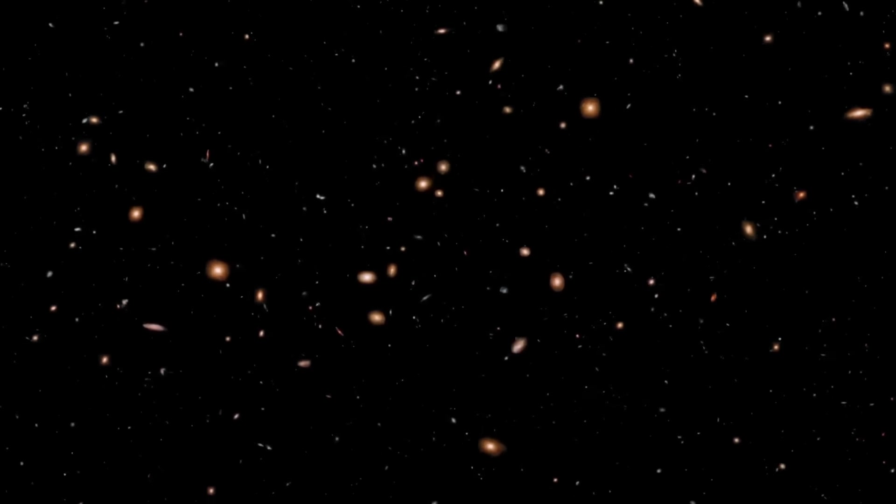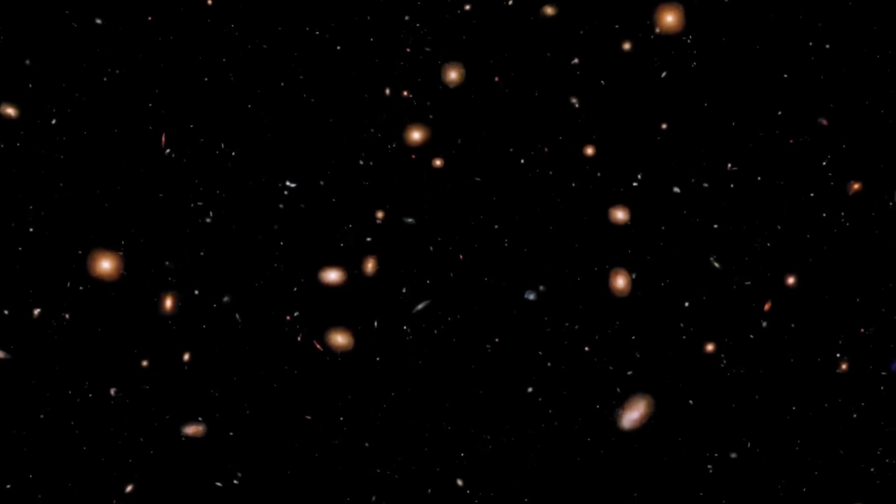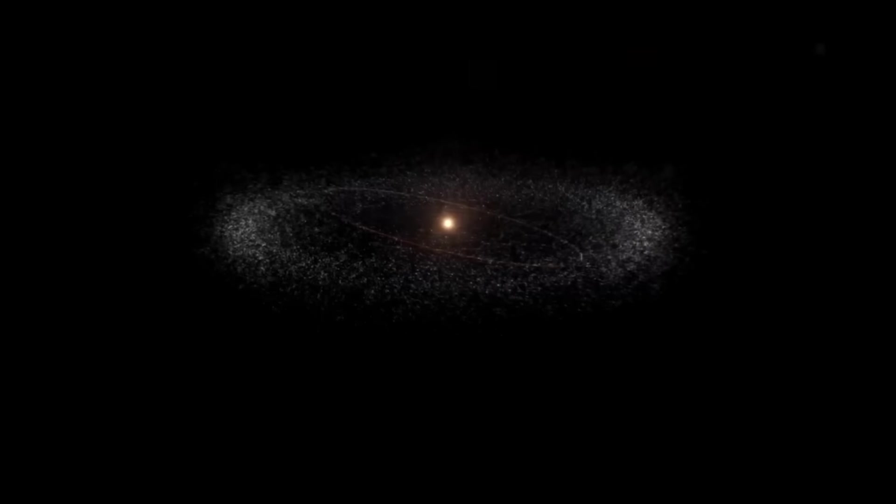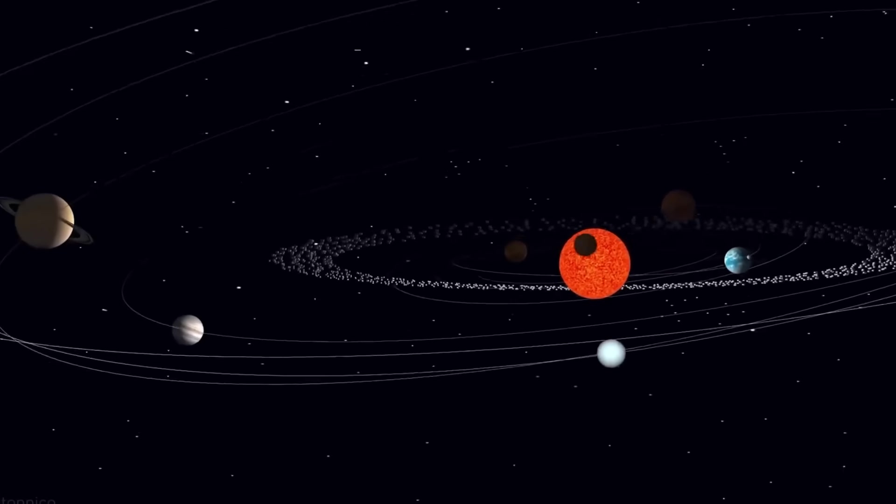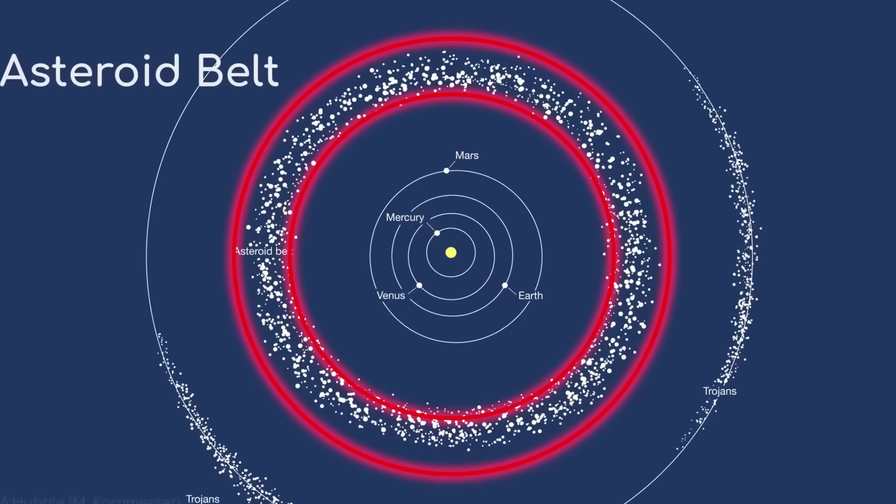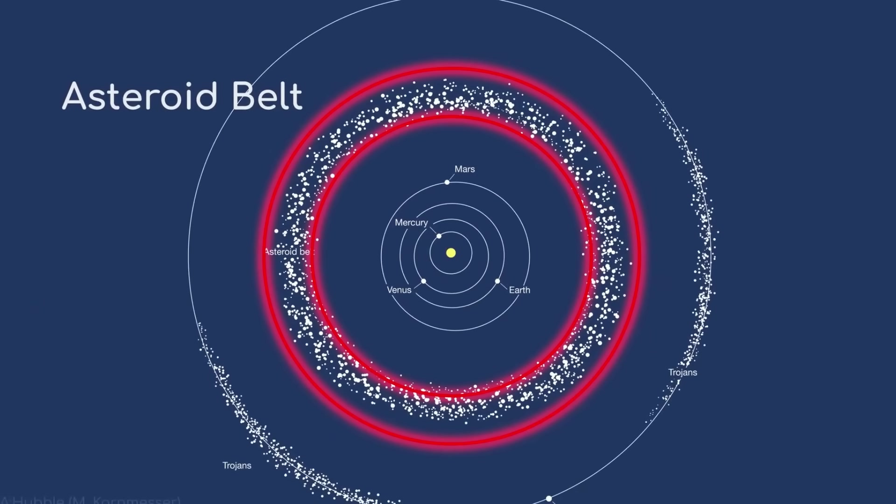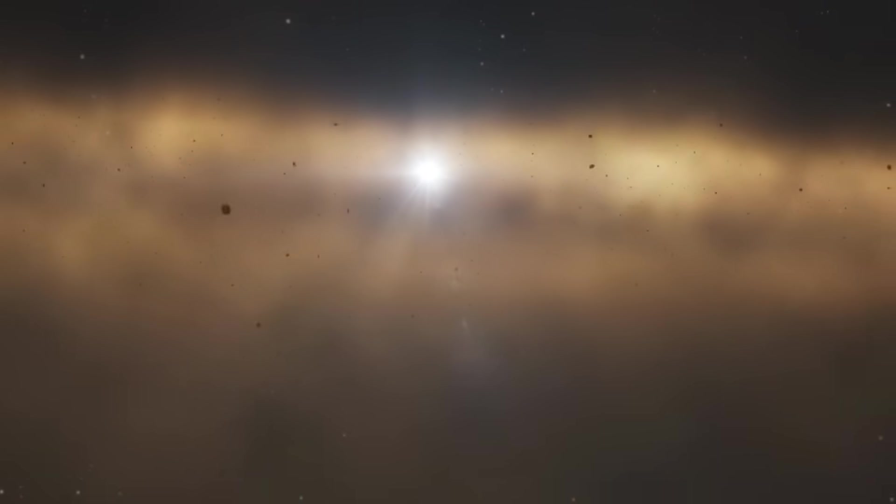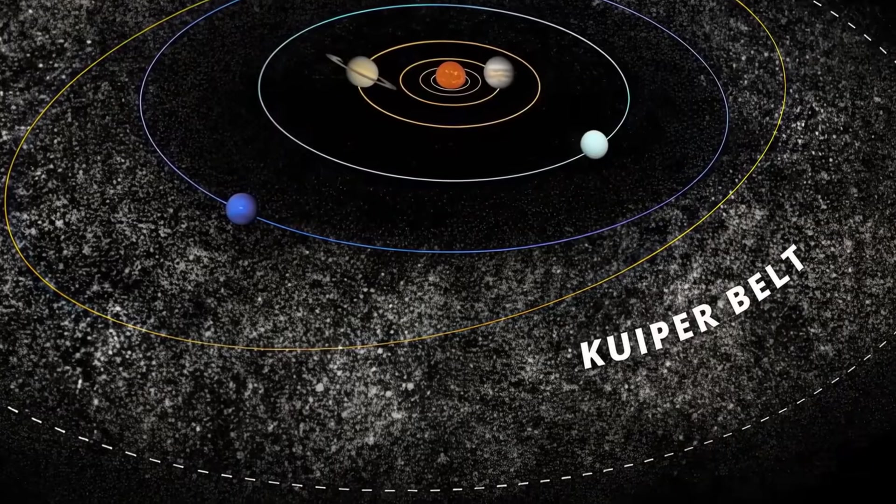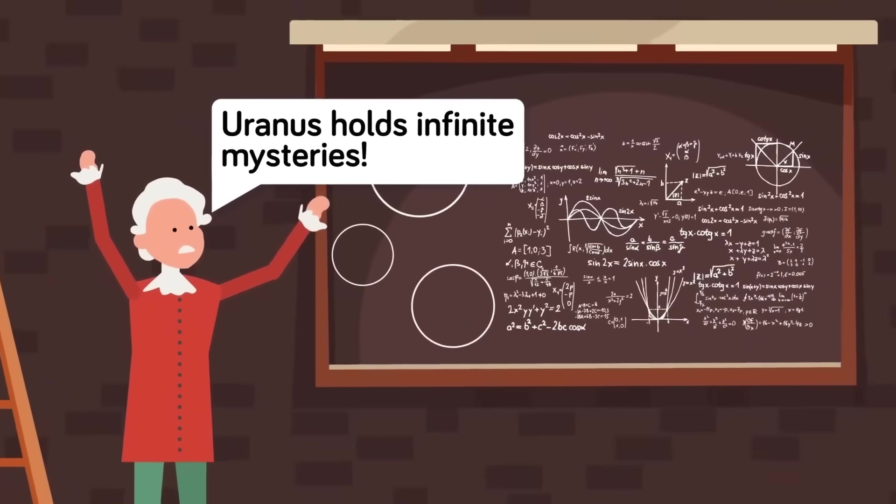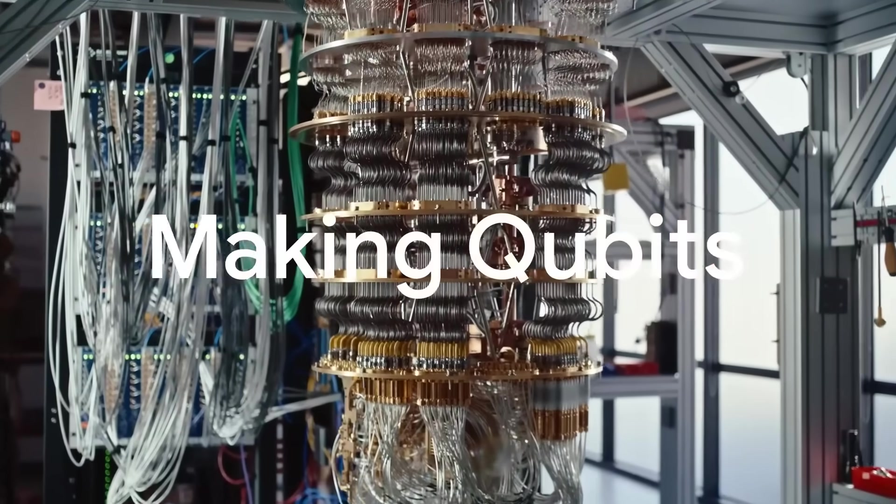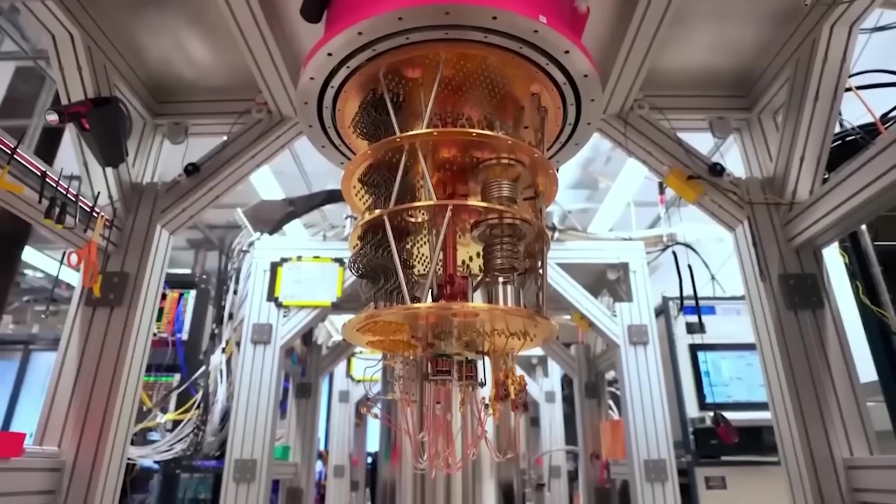Digging deeper, let's consider another layer of speculation. Some theorists suggest that this object might not be isolated at all. It could be part of a larger, unseen system. One hypothesis posits that Planet 9 could be a captured rogue planet, an interloper that was once part of another solar system and was gravitationally snared by our sun. This idea isn't entirely new, but the precision of the quantum AI's findings gives it fresh credibility.